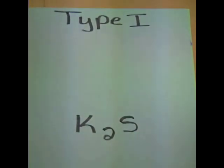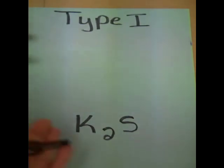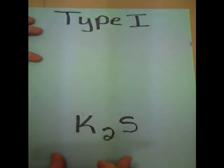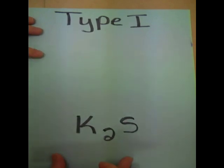Today's podcast will be on naming. When you name a compound, you have three different types: type 1, type 2, and type 3.